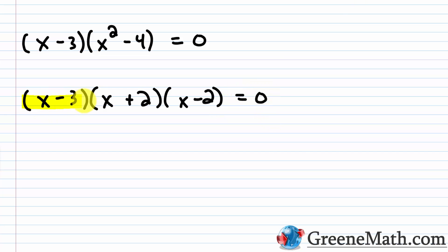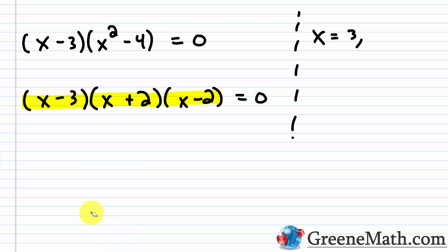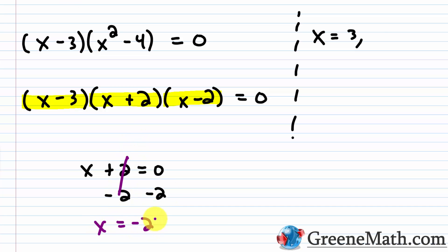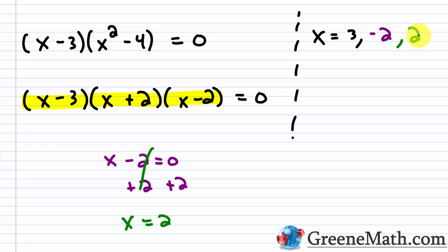Now we set each factor equal to zero. From x minus 3 equals zero, we add 3 to each side to get x equals 3. From x plus 2 equals zero, we subtract 2 from each side to get x equals negative 2. From x minus 2 equals zero, we add 2 to each side to get x equals 2. So our three solutions are x equals 3, x equals negative 2, and x equals 2.